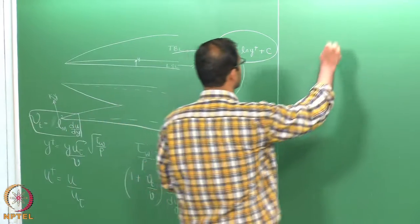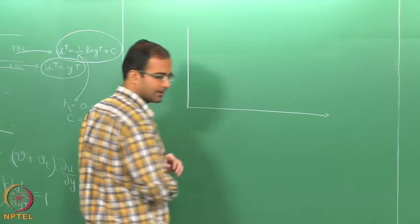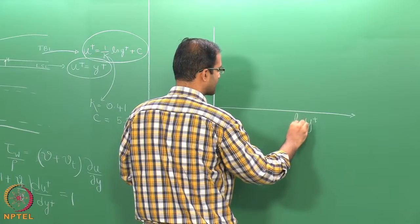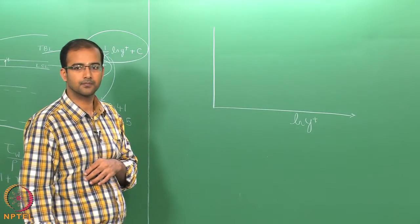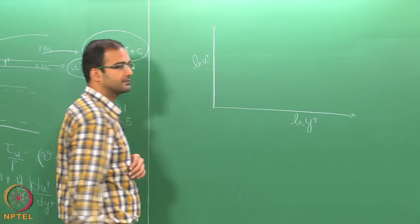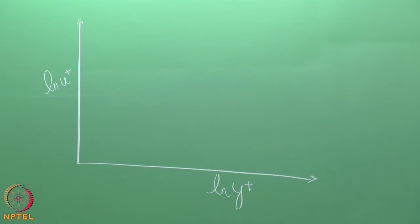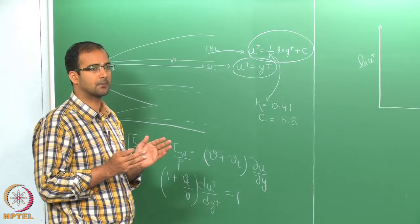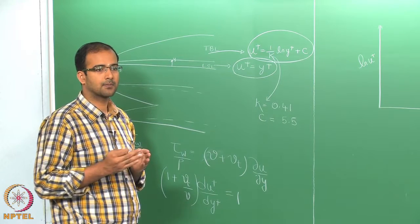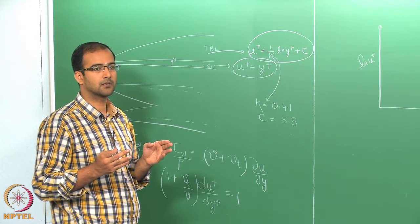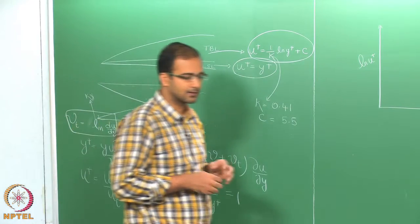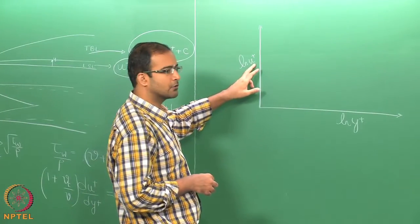Now if you plot these profiles with y+ on the x-axis on a log scale and u+ on the y-axis, you should understand that y+ varies several orders of magnitude. Within the laminar sublayer, y+ is of order 1, whereas in the turbulent boundary layer it can extend up to y+ close to 1000 at the edge of the turbulent boundary layer — three orders of magnitude. Therefore we cannot plot on a linear scale; we have to use a log scale.